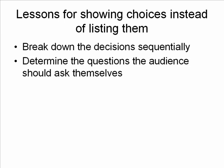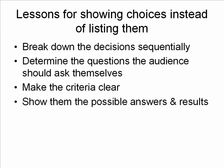Third, make the criteria clear — give them guidance on how they should be answering that question and what criteria they have to satisfy in order to reach a decision. Fourth, in the decision diagram, show them the possible answers — in this case simply yes or no, but there could be more — and show what the result of answering that question in each way actually is. This lets you flow the decision tree and make it easy for people to understand how to make choices.